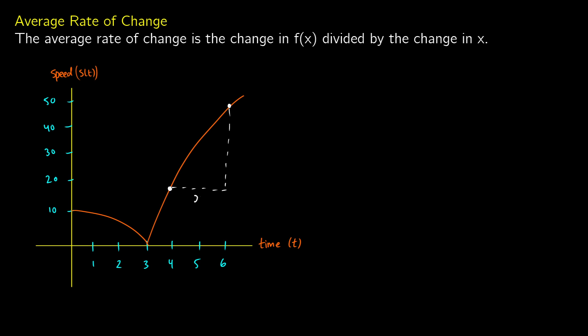To do this I need to consider that I'm using t for this one — we have a change in time and in that change of time we're changing in speed. We'll call this s of t for the speed relative to time. I can figure this out by taking the total change during that time period and dividing it by how much time it took, and that'll give me the average change of speed. The formula is: s of t final minus s of t initial, divided by the final time minus the initial time.